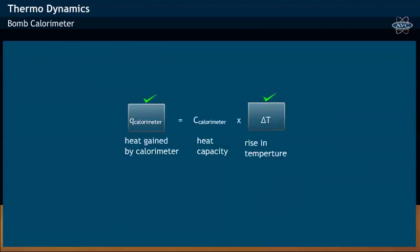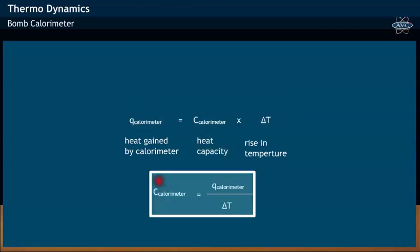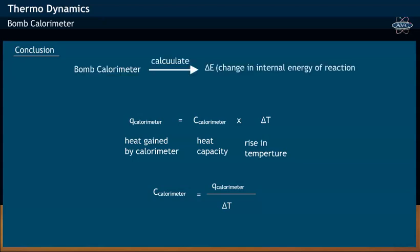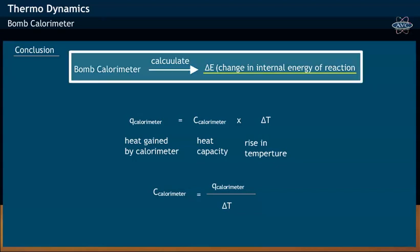Knowing both Q and ΔT values, the heat capacity of the calorimeter, C_calorimeter, may be calculated. One may conclude that a bomb calorimeter is used to measure the change in internal energy, or ΔE.